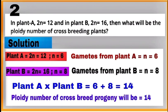Now when crossbreeding, when their gametes fuse, the total number of chromosomes in the zygote will be 6 plus 8, which equals 14. So the ploidy number of crossbreed progeny will be 14.